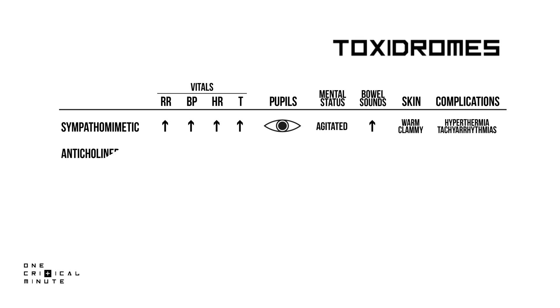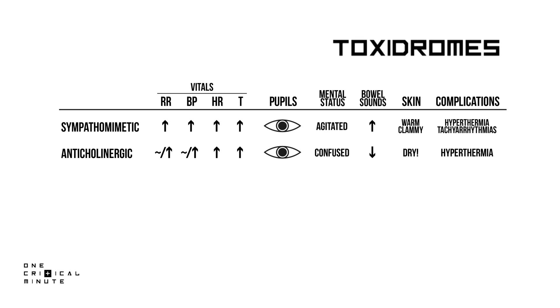Anticholinergics like atropine and oxybutynin give a similar effect to that of sympathomimetics. However, their skin is dry and they have decreased bowel sounds. They are more confused than agitated. Watch out for hyperthermia.